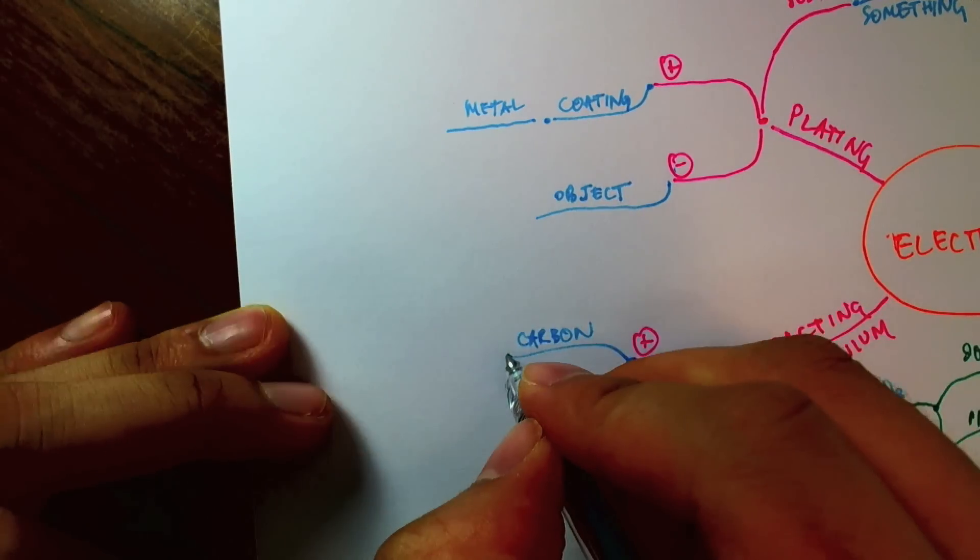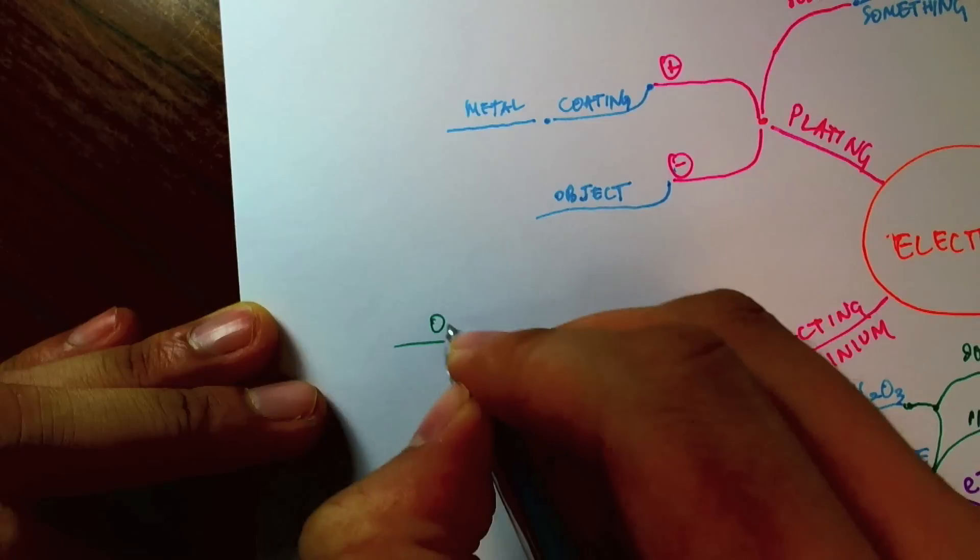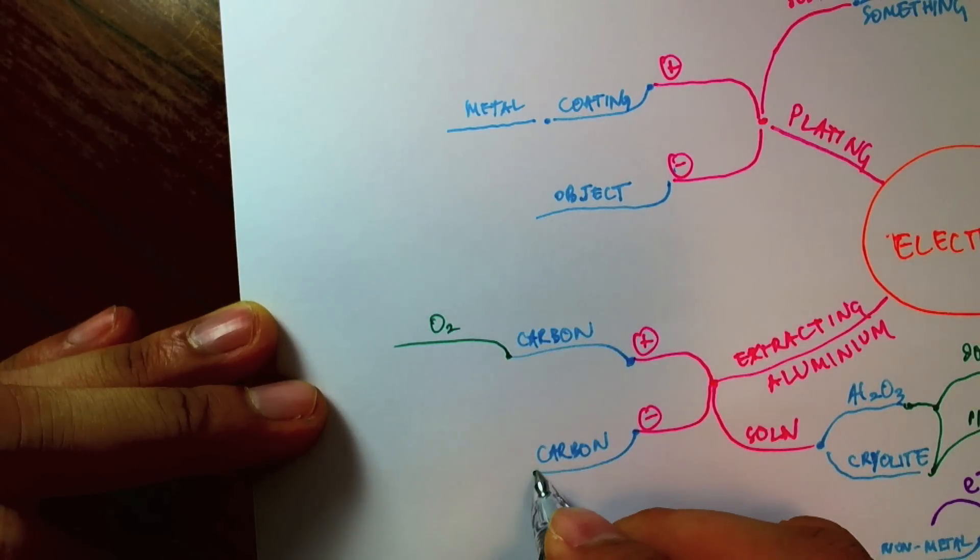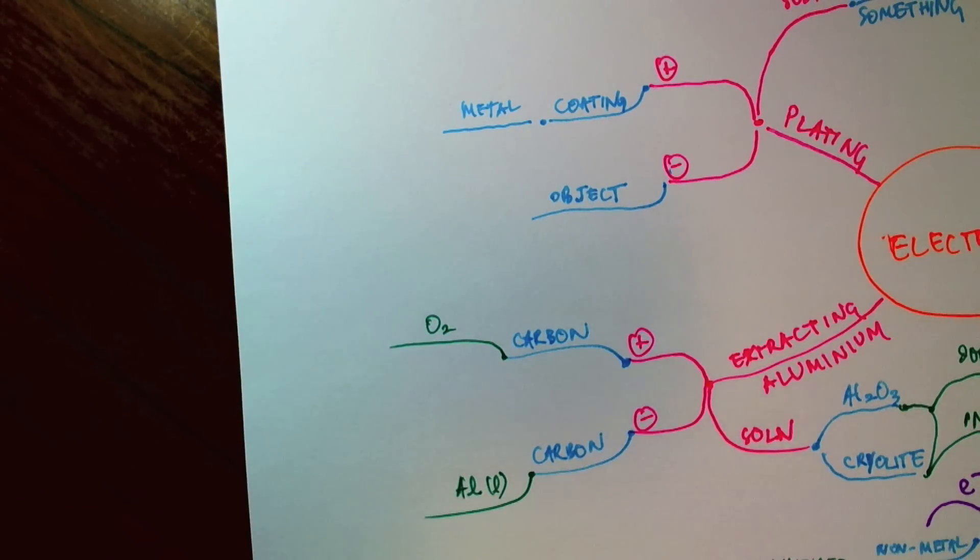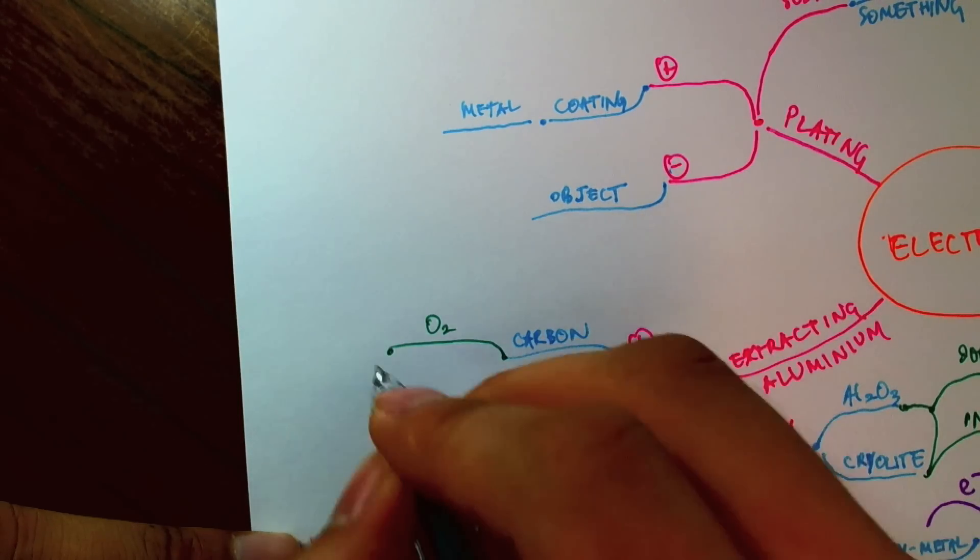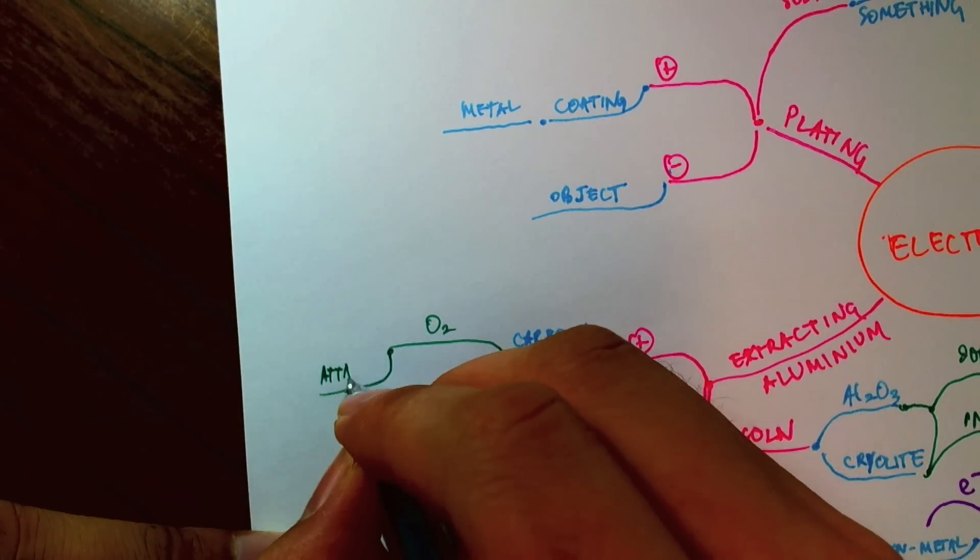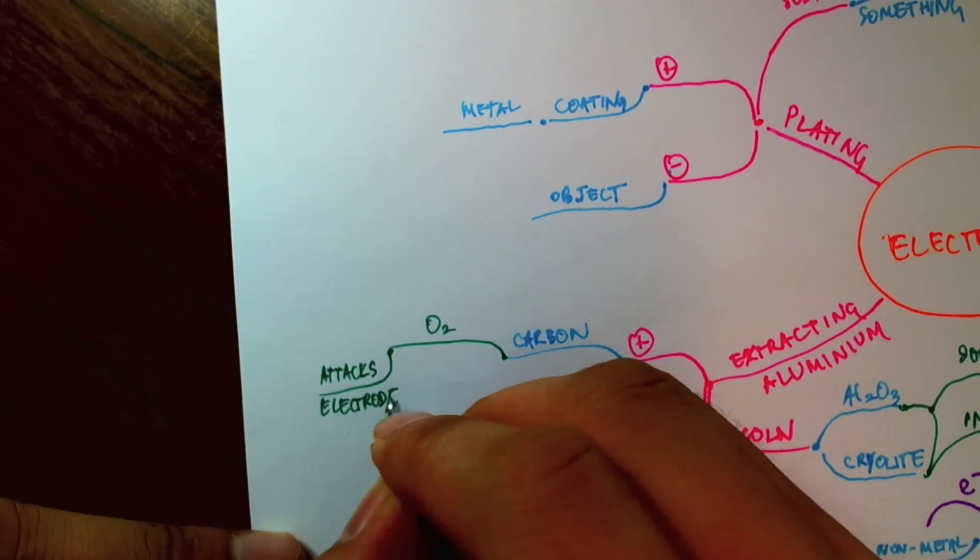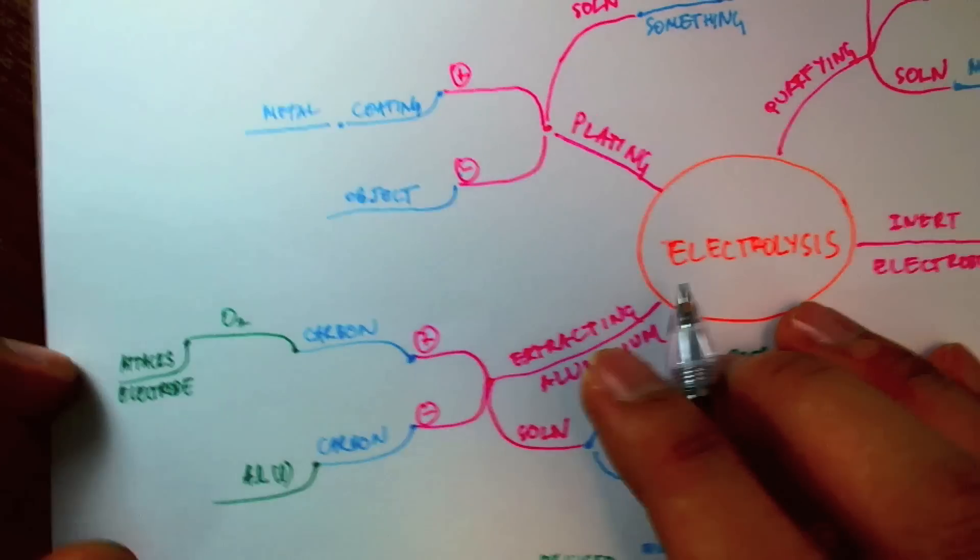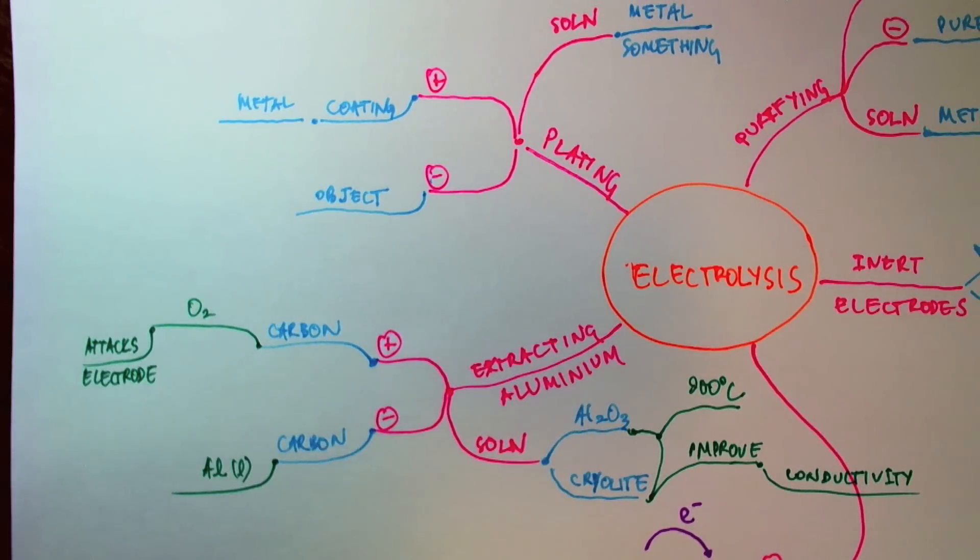At the anode, oxygen was released. At the cathode, we had the liquid aluminum that we wanted from the start. So this carbon we saw attacks the electrode. So the carbon electrode at the anode needed to be replaced from time to time because it reacts to the oxygen to form carbon dioxide.